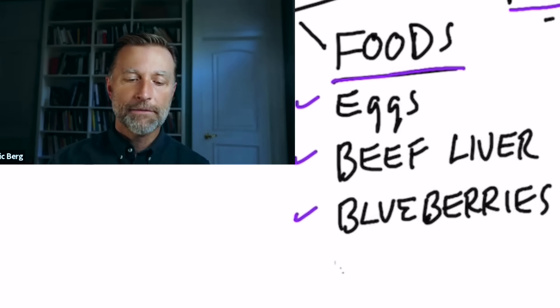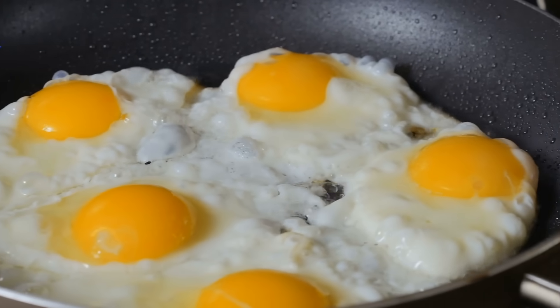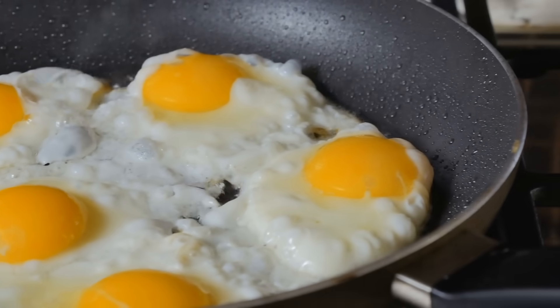As far as food goes, you want to eat foods high in choline, which is a precursor for acetylcholine. And the food that has the most choline is egg yolks. So this is another reason why you should be eating eggs. I consume a lot of eggs. I probably consume three to four eggs every single day.